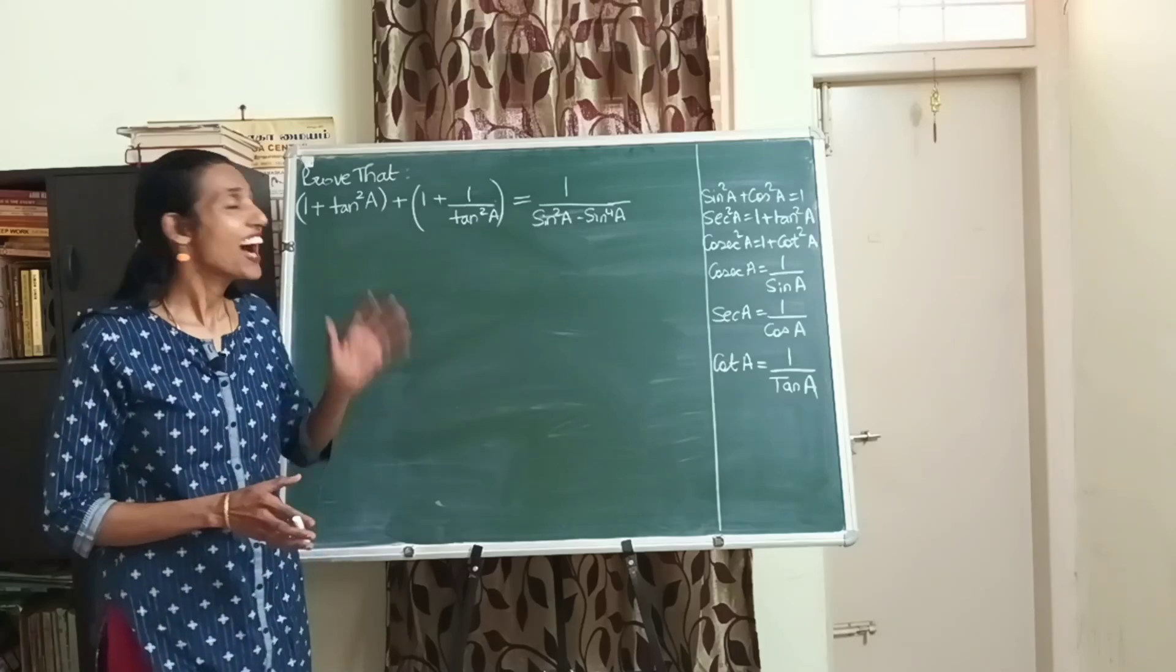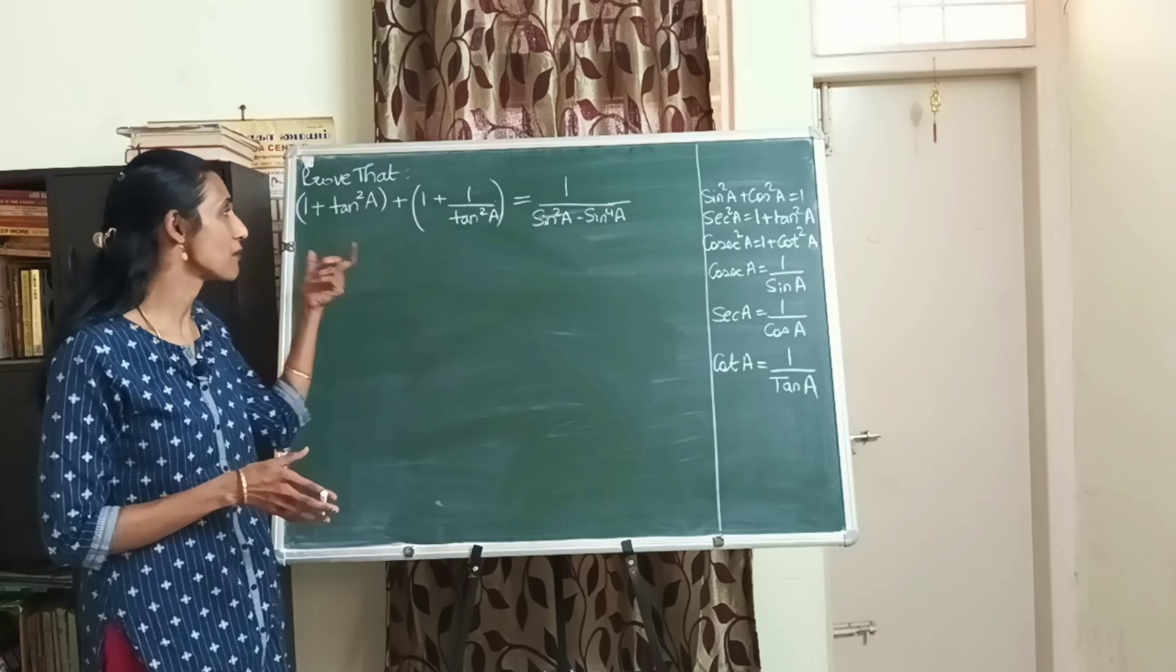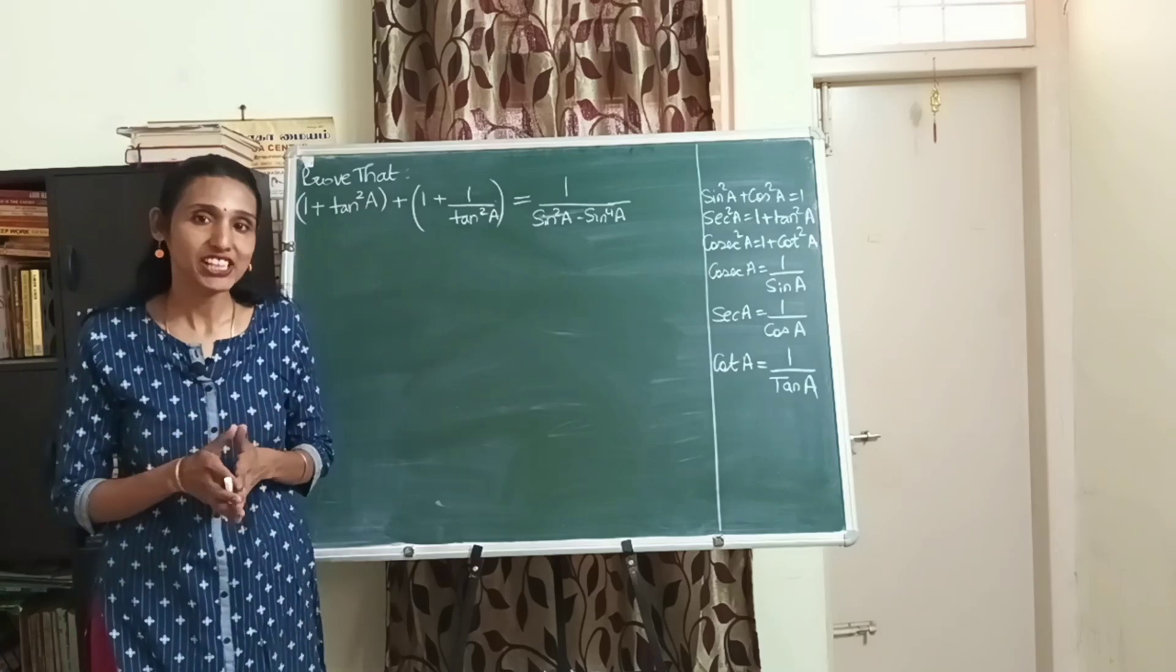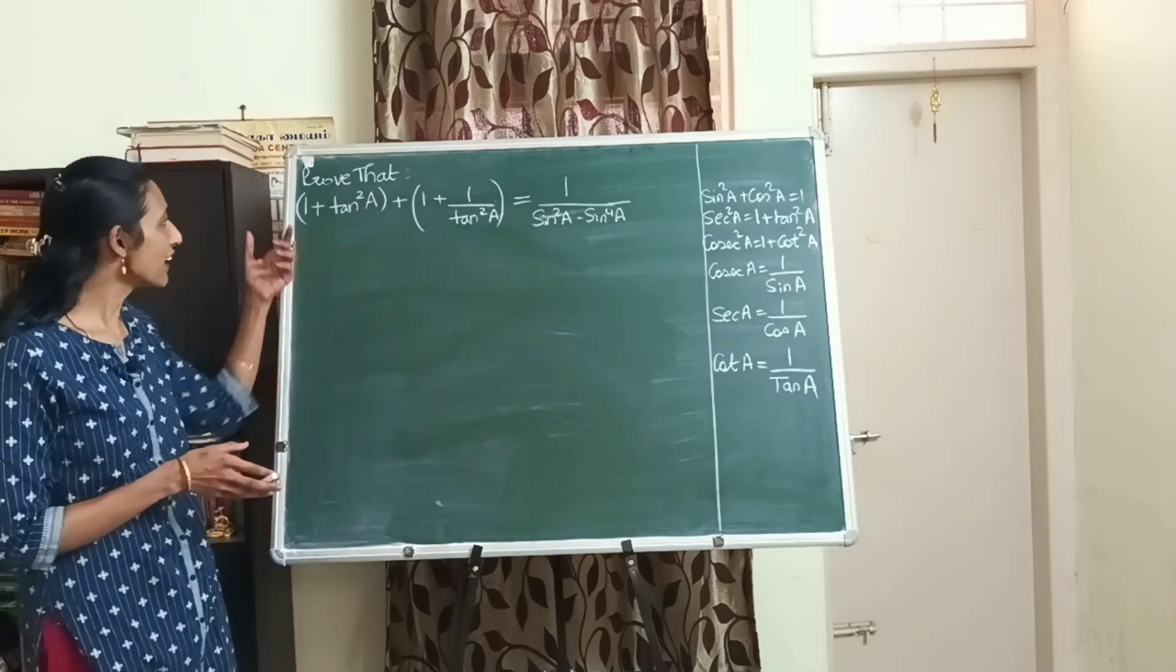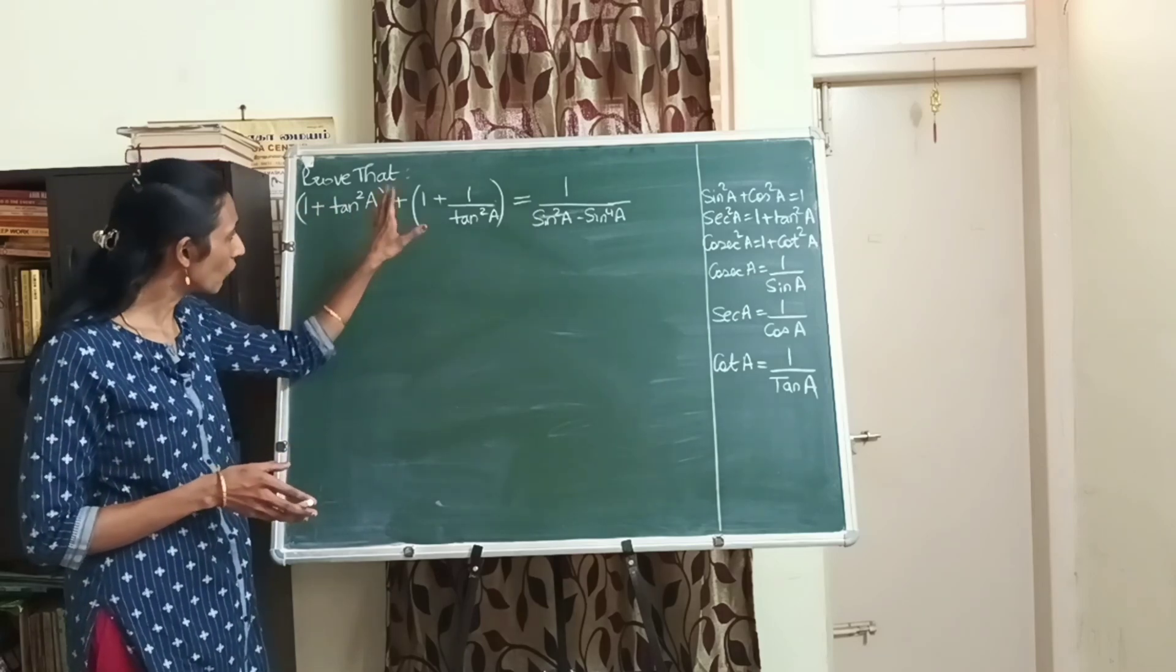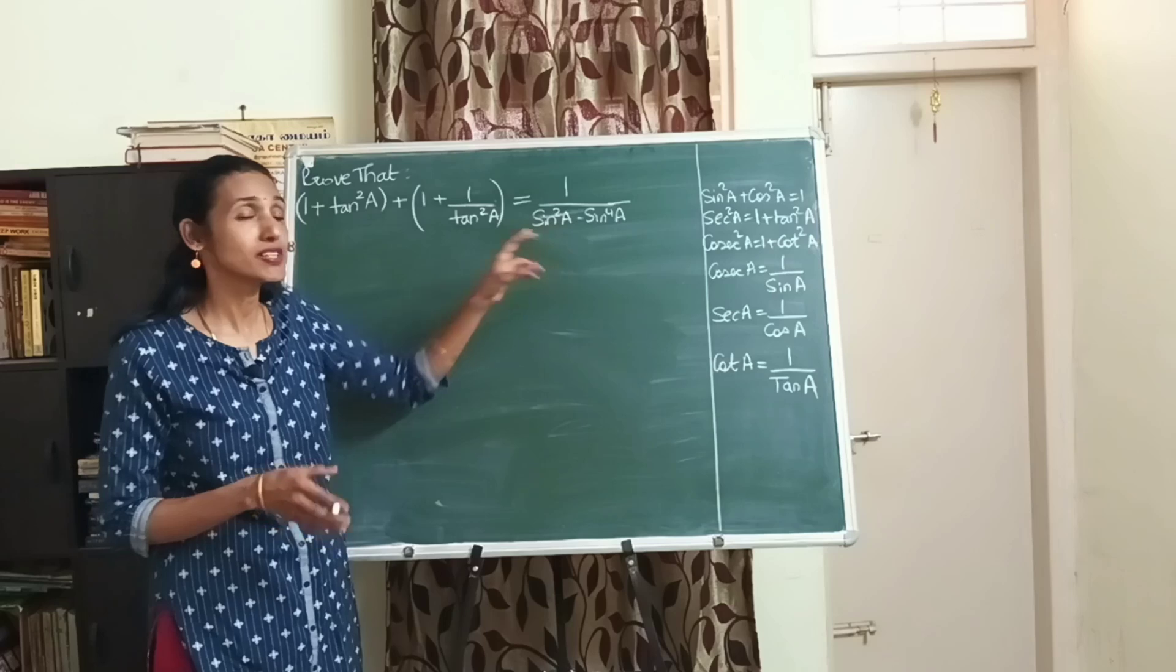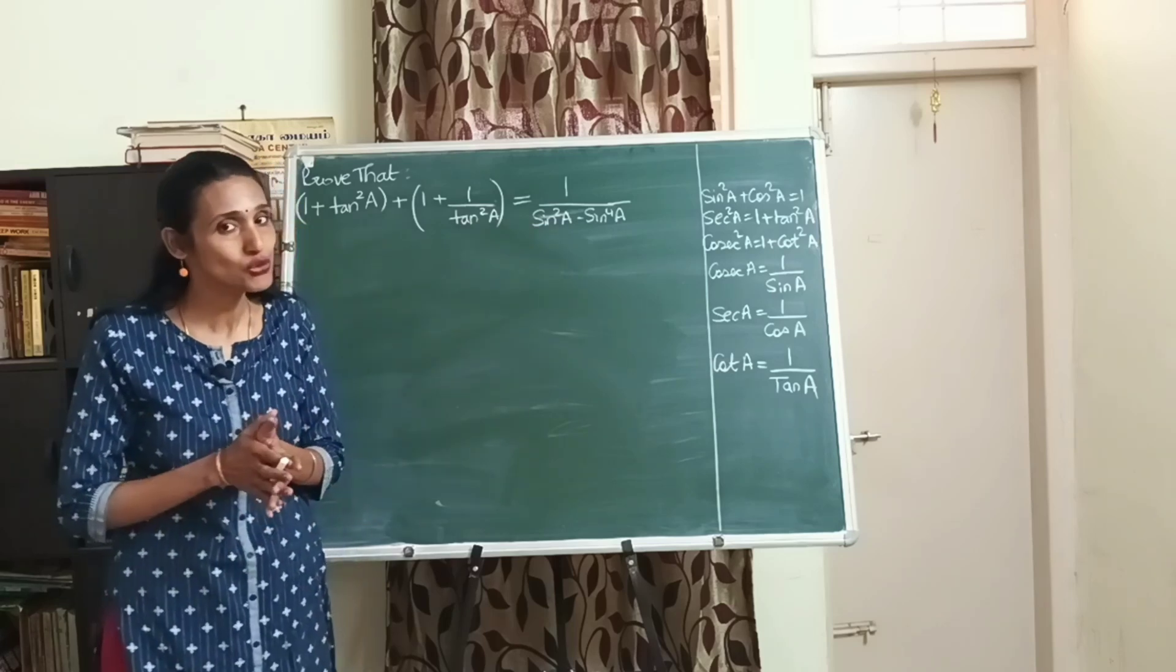Hello everyone, today let's learn how to solve proof-that questions in trigonometry. This question has come as a request from one of our Enjoy Math viewers. We have to prove that 1 plus tan square a plus 1 plus 1 by tan square a is equal to 1 upon sin square a minus sin raised to 4a.